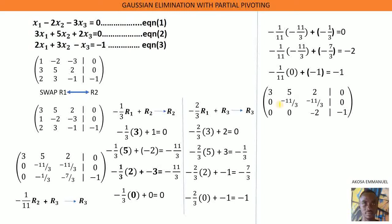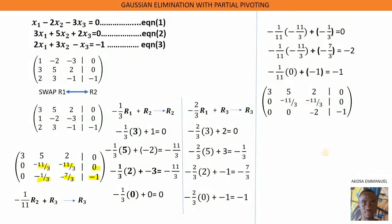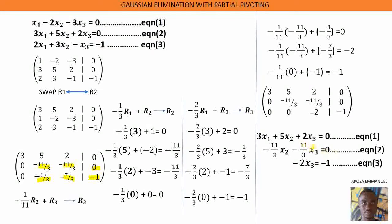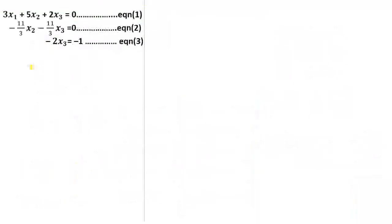The matrix after reducing the second column is this matrix here. We can now write our matrix in the form of an upper triangular system. We can now solve for S1, S2, and S3 using back substitution. From equation 3, we divide both sides by negative 2, and we get S3 equals one half.